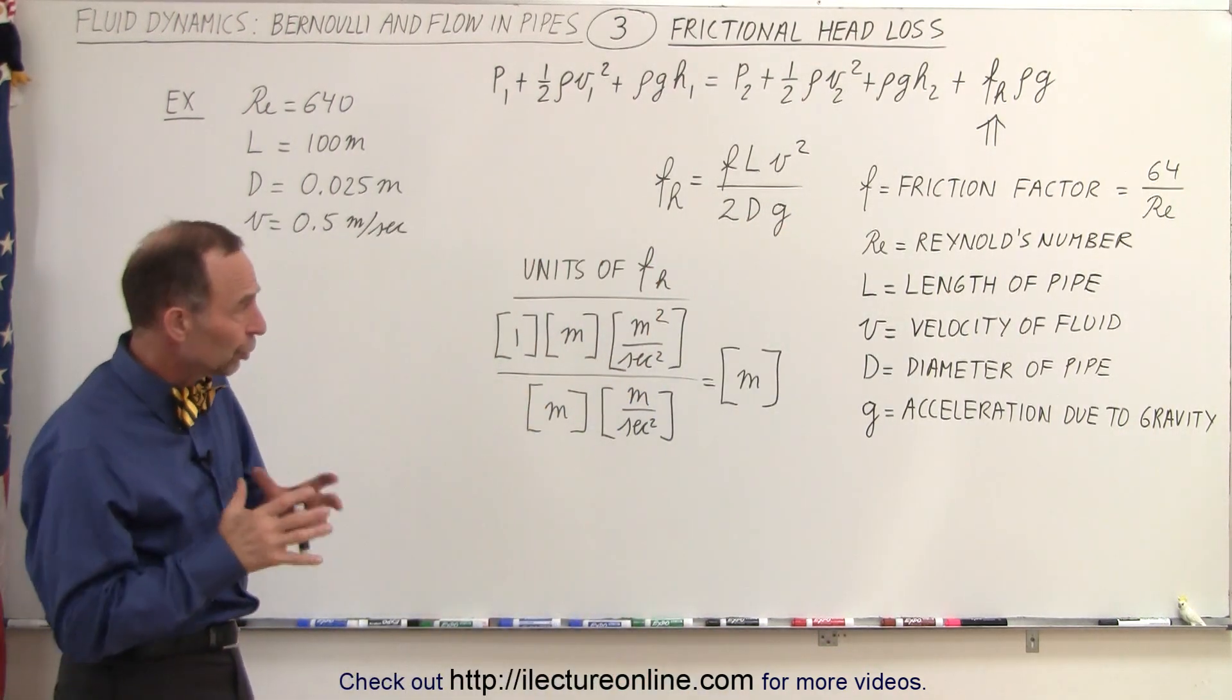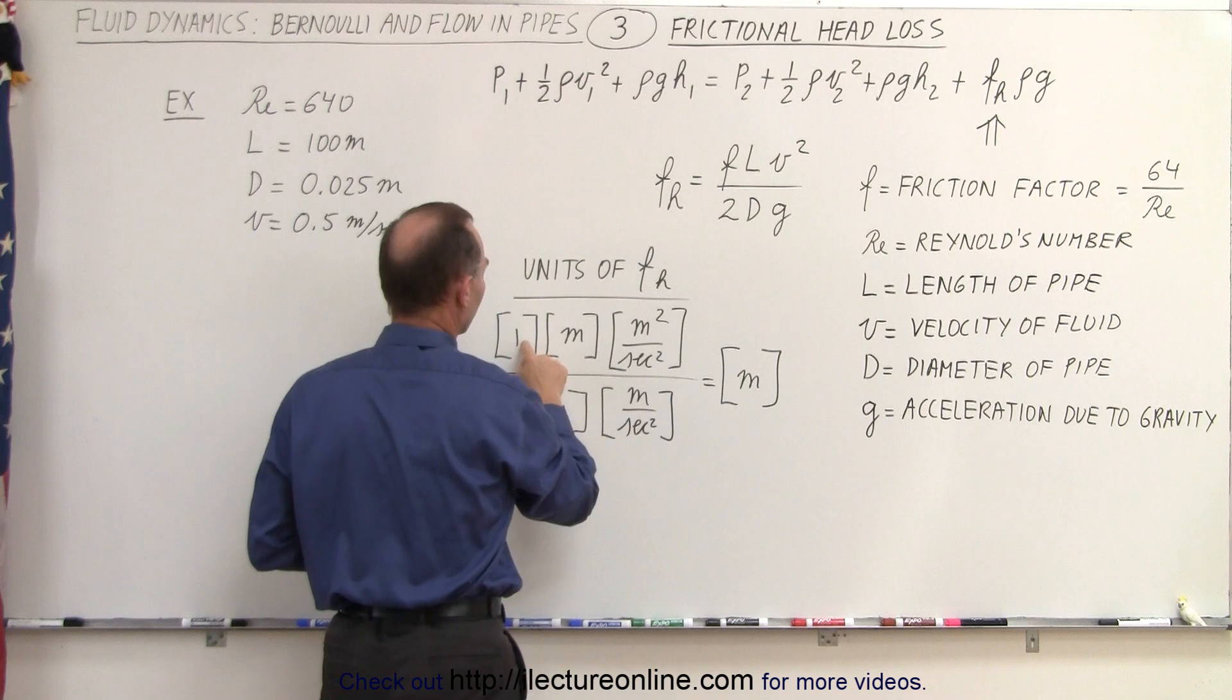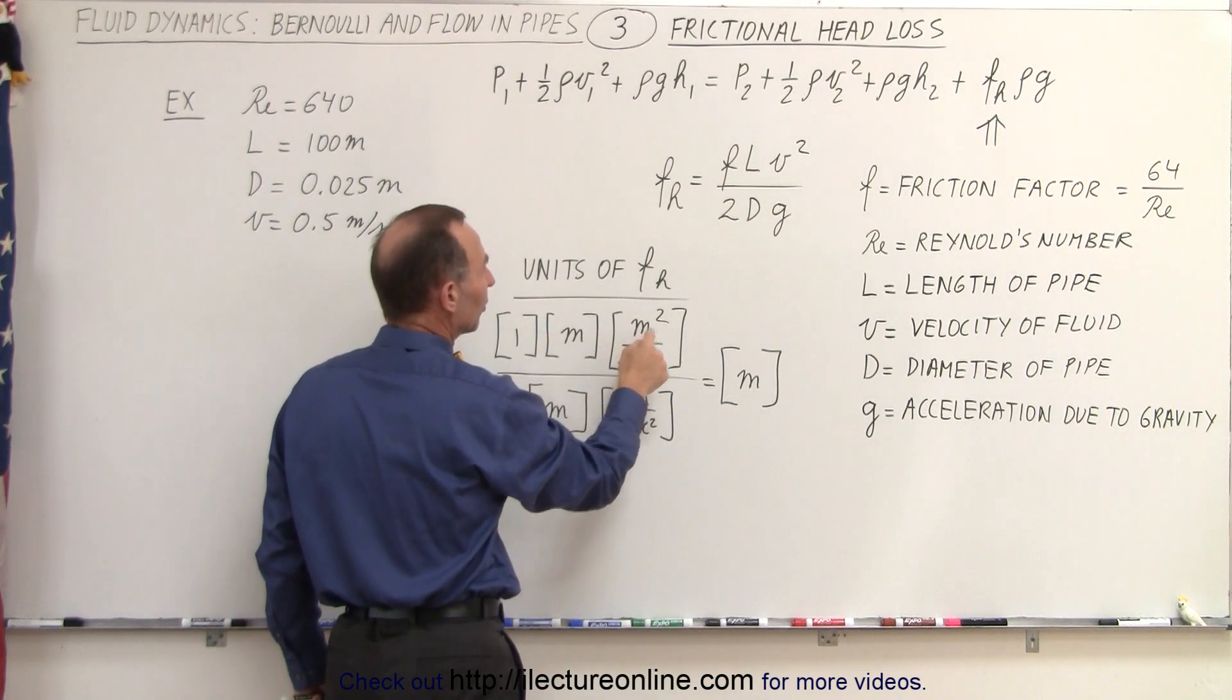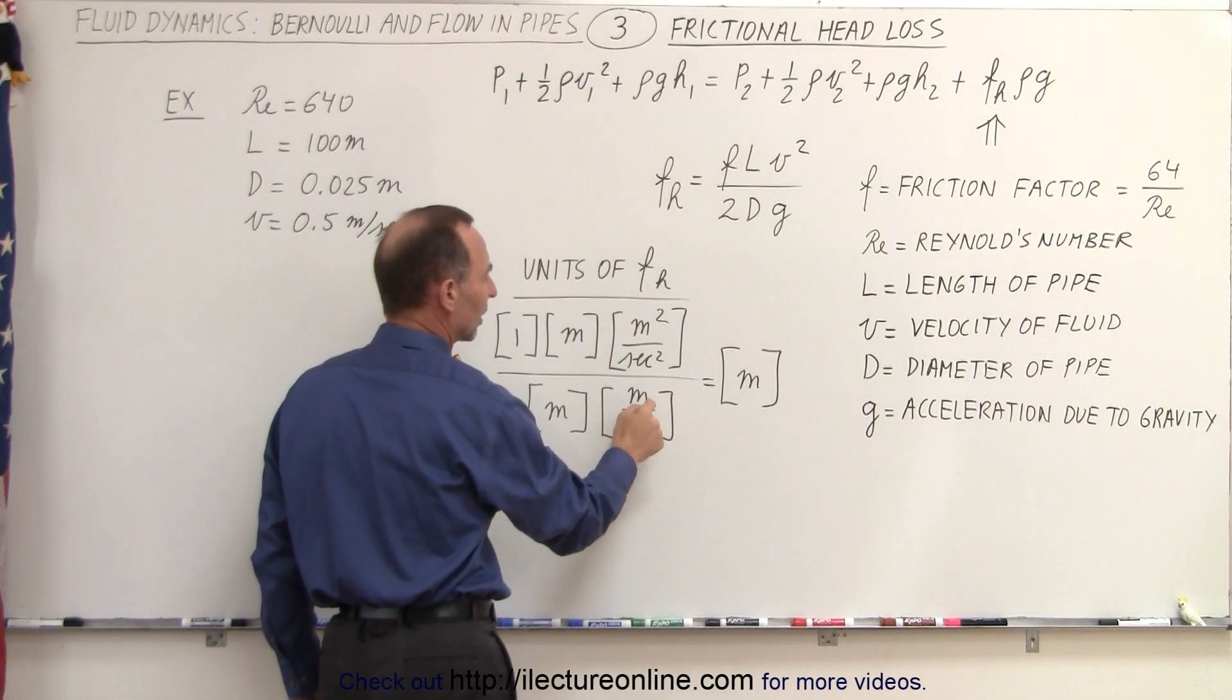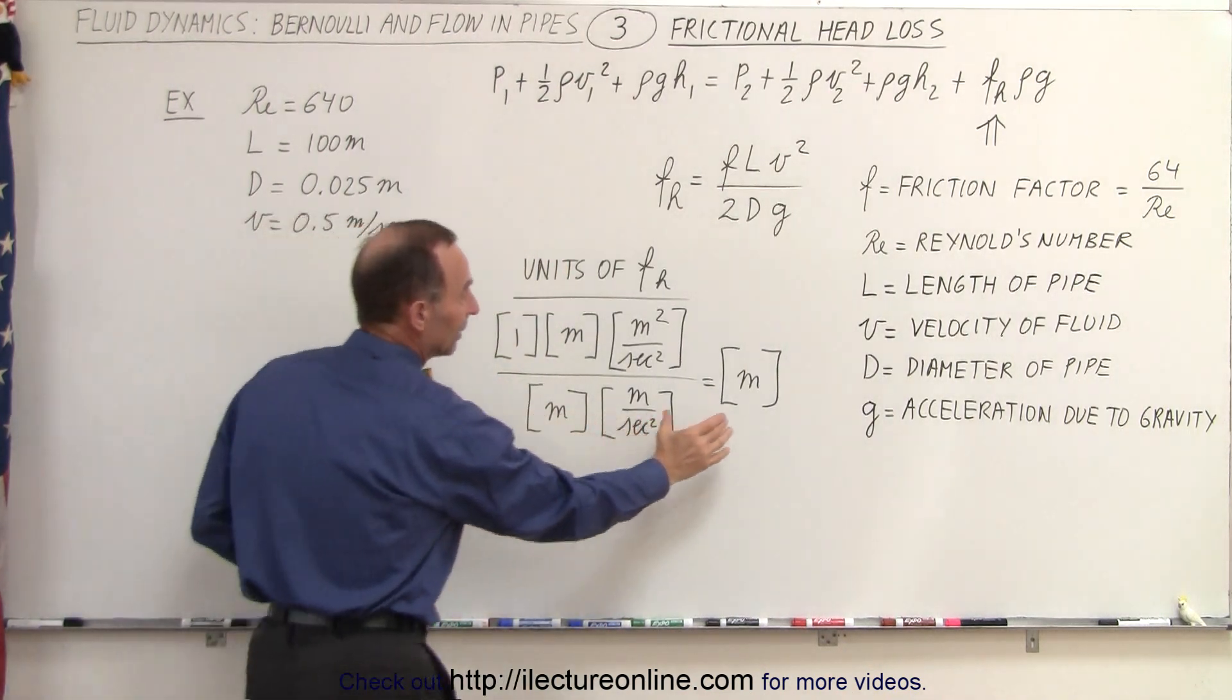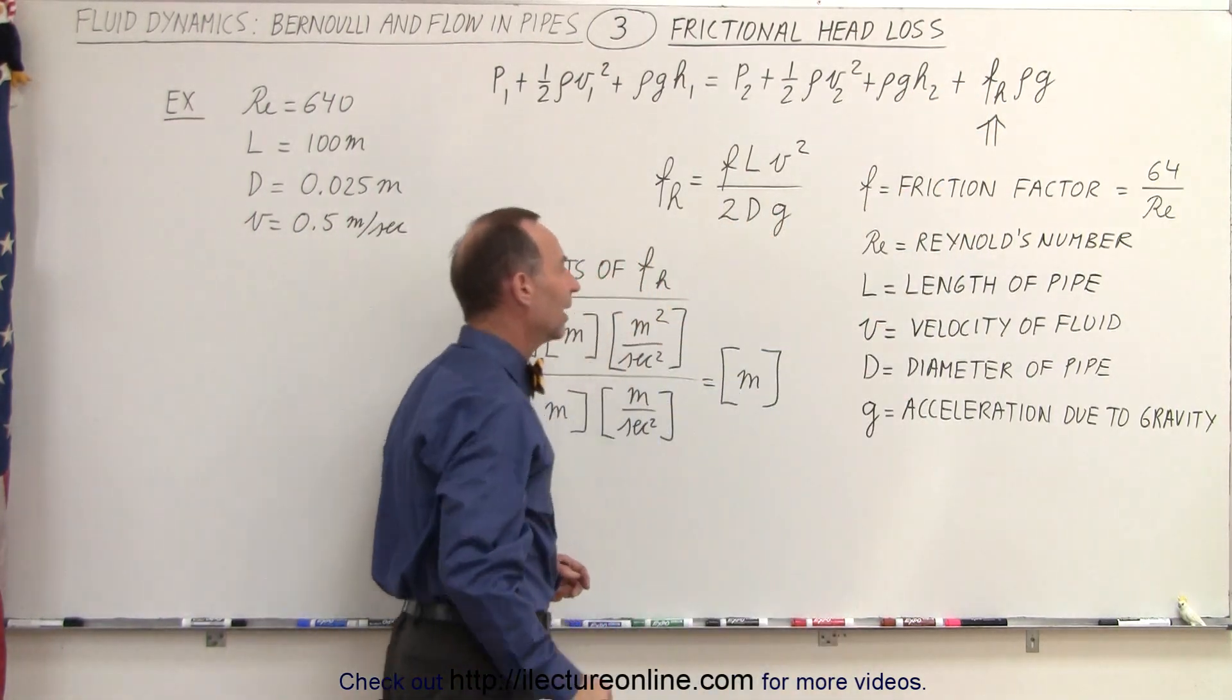If you want to look at the units of the frictional head loss, you can see that the units of the friction factor are unitless, so we just write 1. The units for length are meters, velocity is meters per second squared. The units of diameter are meters, and the units of g, the acceleration due to gravity, are meters per second squared. When you simplify that, indeed we get meters. So you can see that the units for the frictional head loss are the same as the units for height.